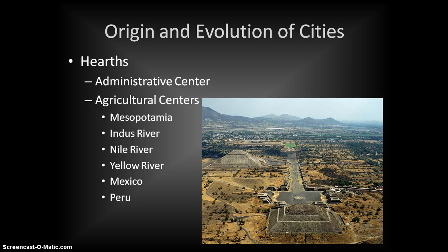One thing we note is that all cities are administrative centers. Cities are going to be places where people of power exist — whether a king, a religious figure, or whoever it happens to be. The city always acts as the hub of power, the hub of administration, those who make the rules. If you want access to the important person, that person is living in the city, and people tend to congregate around them, almost like a king's court.